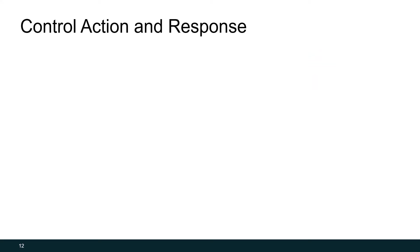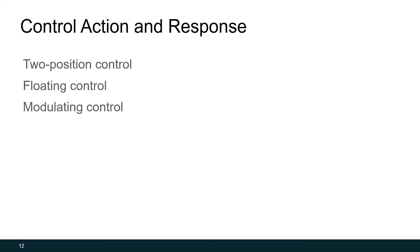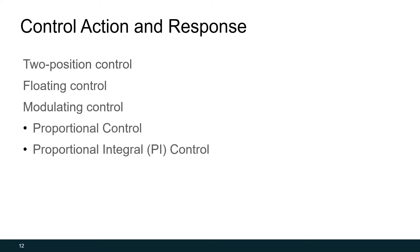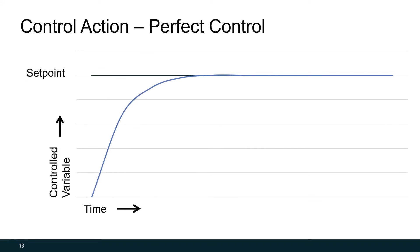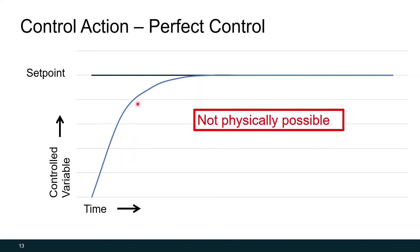The next section covers control action and response — how our controllers are set to react to changes in the controlled variable and how quickly they respond to get to setpoint. We'll be going through two-position control, floating control, and modulating control — including two types of modulating control: proportional control and proportional integral control. But first, let's cover perfect control. This is the ideal scenario: when space temperature is much lower than setpoint, we heat the space very quickly, reach setpoint, and have it stay there. Unfortunately, this isn't very realistic given the limitations of our sensors, controllers, and control devices — but it's ideally what we want to accomplish.